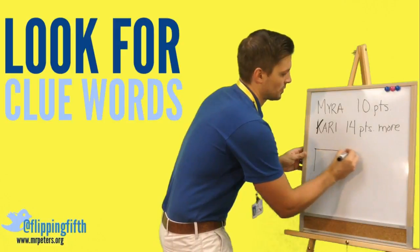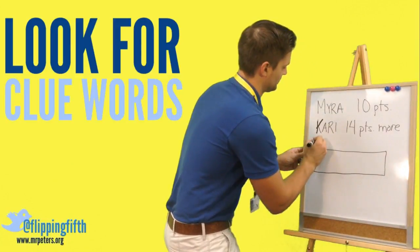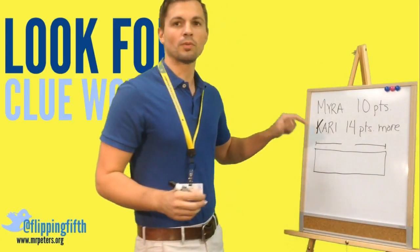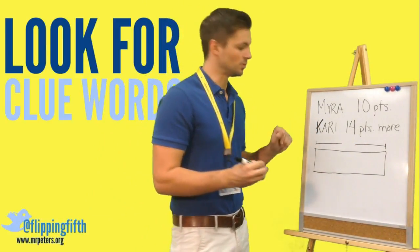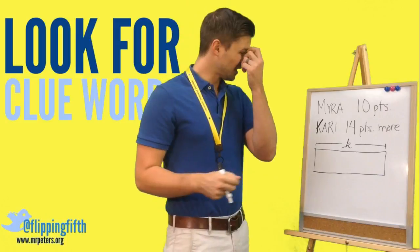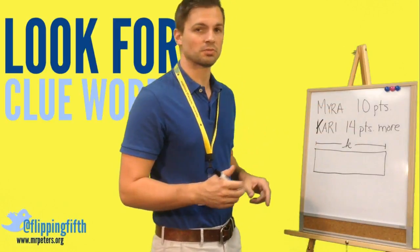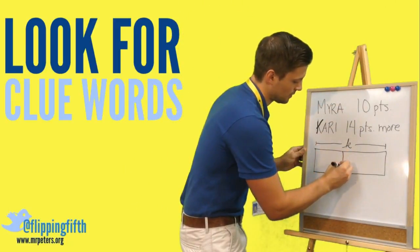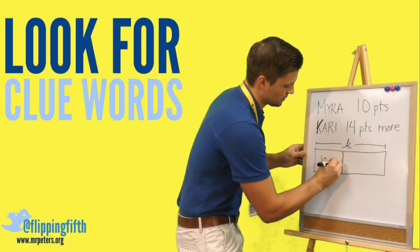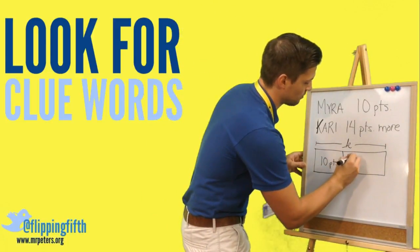I'm going to start off by drawing a big rectangle. What we're trying to find here is how many points Kerry scored, so I'm going to use a lowercase cursive K for Kerry. Myra scored 10 points, so I'm going to divide this somewhat in half and have Myra over here — she scored 10 points. Kerry scored 14 points more.